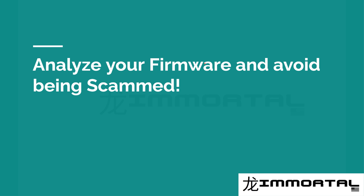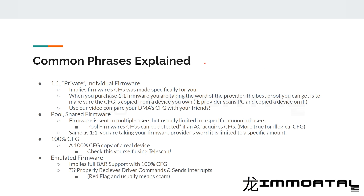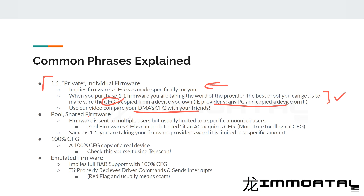Let's go over some common phrases before we show you how to analyze your firmware to avoid being scammed. First is one-to-one private individual firmware. This implies that the config space was made specifically for you. When you purchase one-to-one firmware, you're taking the word of the provider. The best proof you can get is to make sure this config space is copied from a device you already own — you can look at the config space between devices and confirm it is indeed one-to-one. We're going to show you how to analyze your DMA config.